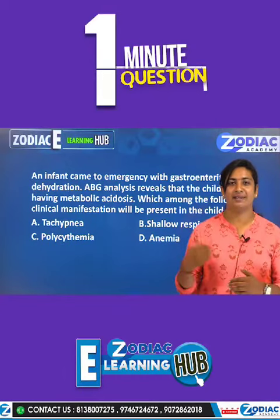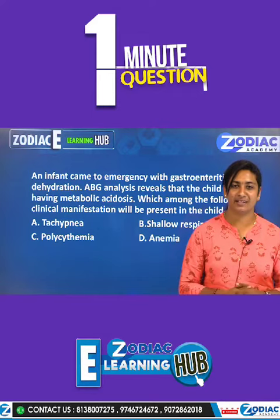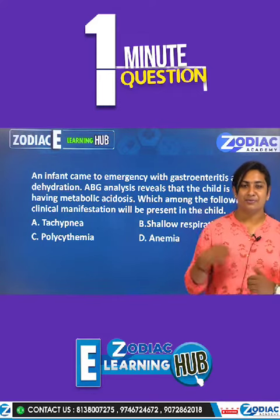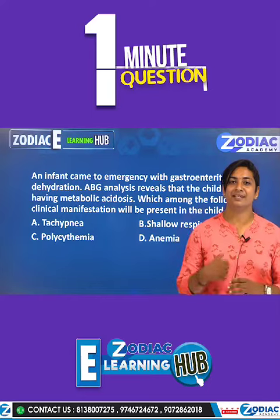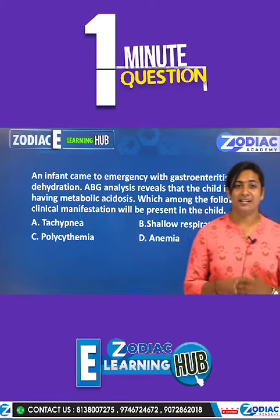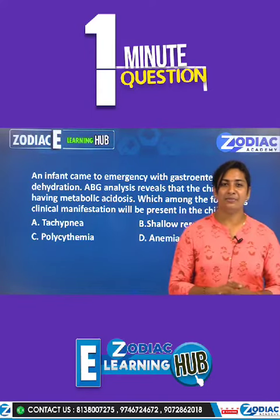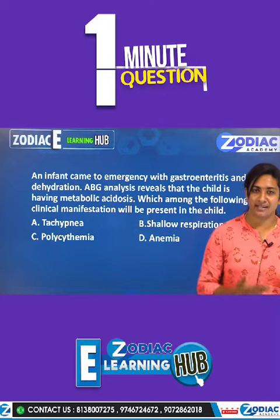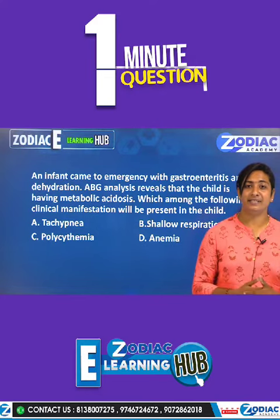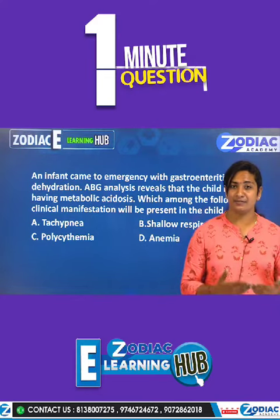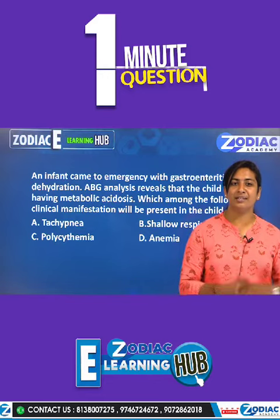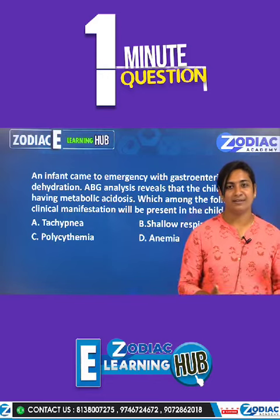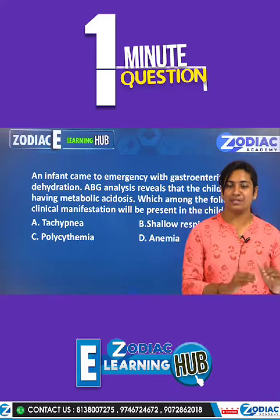Welcome learners, and welcome to Zodiac E-Learning Hub. Today's question comes under pediatric nursing: an infant came to emergency with gastroenteritis and dehydration. ABG analysis reveals that the child is having metabolic acidosis. Which among the following clinical manifestations will be present in the child?